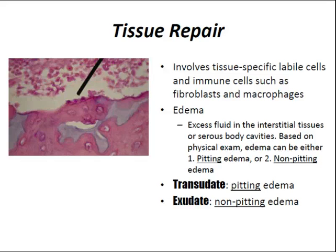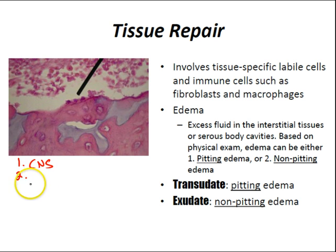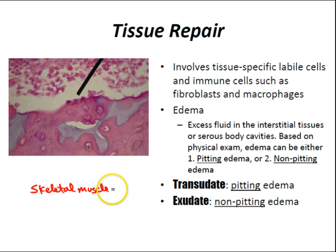Permanent cells are incapable of division and regeneration, and are replaced by scar tissue after irreversible injury. There are only three cell types: CNS neurons, myocardium, and skeletal muscle. If skeletal muscle is lost, it doesn't grow back.